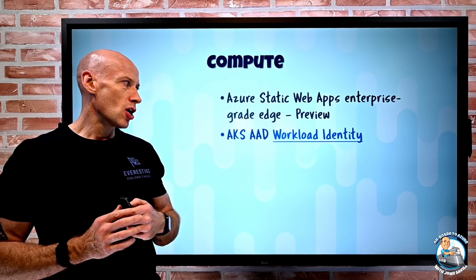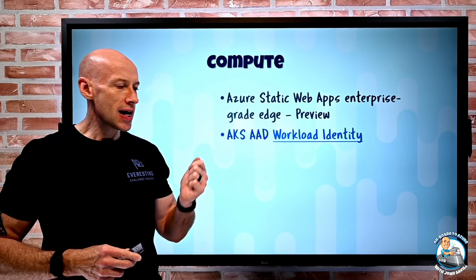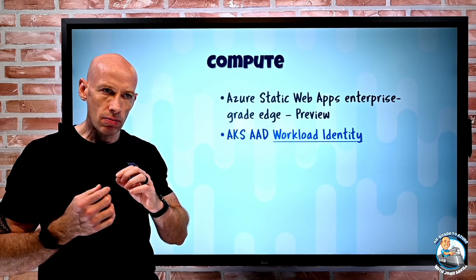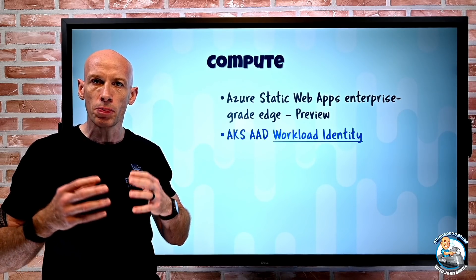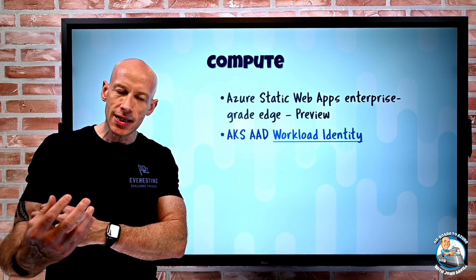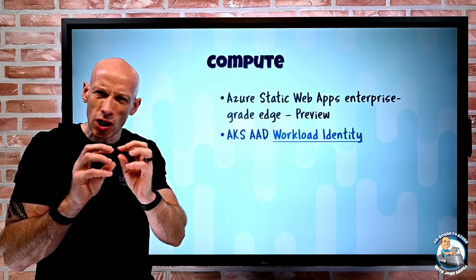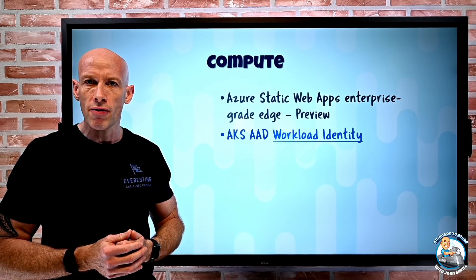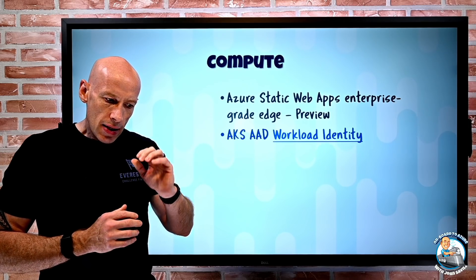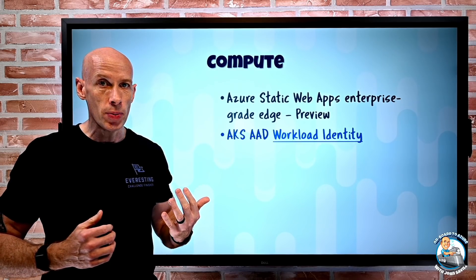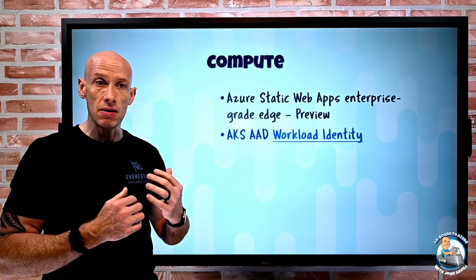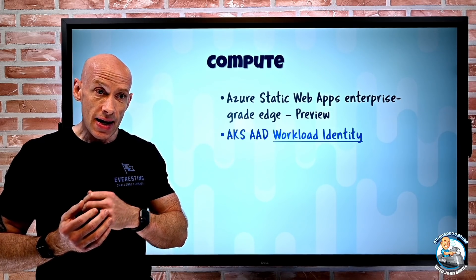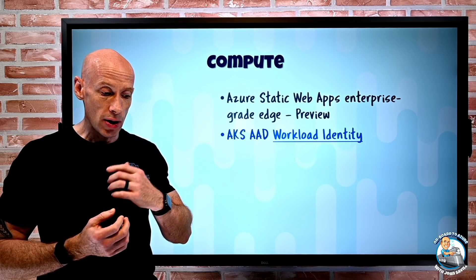Azure Kubernetes Service now has Azure AD Workload Identity. This will basically be a replacement for the current in-preview solution for pod-based identity that uses a managed identity with specialist pods running in AKS to give tokens to authorized pods. This new solution will work on any Kubernetes deployment — AKS, another cloud, or on-premises.